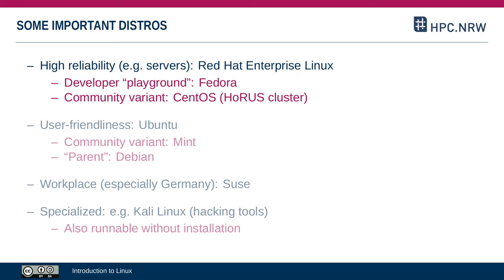Red Hat Enterprise Linux has fewer features but increased stability. The company Red Hat also distributes another system called Fedora, which is the desktop counterpart to Red Hat Enterprise Linux — for example, if you're a developer who develops for Red Hat Enterprise Linux, you can use Fedora to test things. Additionally, there's CentOS, which is a fork of Red Hat Enterprise Linux, maintained by a community. The cluster at Unisiegen used for examples in this tutorial runs on CentOS.